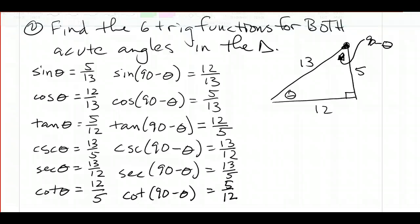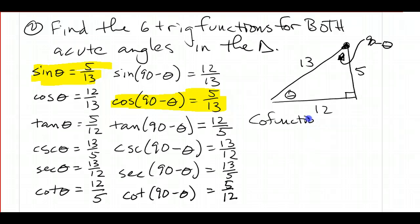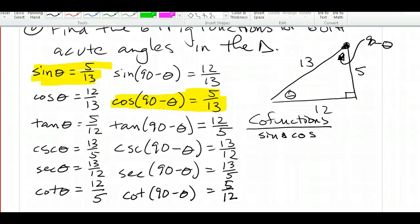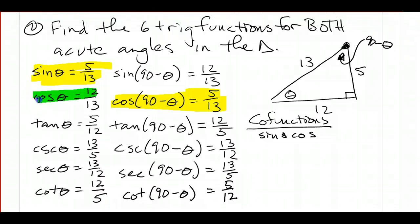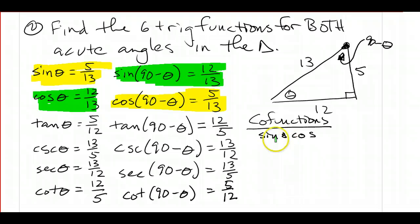Let's take a look at the sine of theta and the cosine of 90 minus theta — you can see that they're equal. So sine and cosine are what we call co-functions. I have theta and 90 minus theta which are complements, and co-functions of complementary angles are equal. Similarly, cosine of theta is 12 over 13 and sine of 90 minus theta is also 12 over 13 — again, sine and cosine are co-functions, theta and 90 minus theta are complementary, and they're equal.